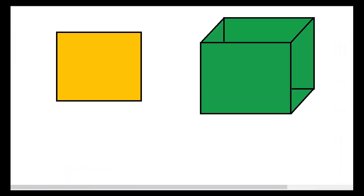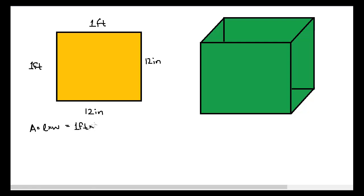Let's go to the diagram. Let's say I have a square, and I'm going to talk about the area of the square — the yellow shaded region. If this was one foot by one foot, then each side would also be 12 inches. If I calculate the area, it's length times width: one foot times one foot equals one square foot. If I do the same calculation with inches, it's 12 inches times 12 inches, which equals 144 square inches.